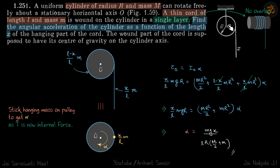We are given a cylinder on which a thread is wound, with x length of the thread hanging down. The total length of the thread is l, of which the x part is hanging down. The thread is wound in a single layer, meaning there is no overlap, so all the rope is at a distance r from the center.